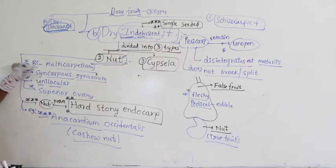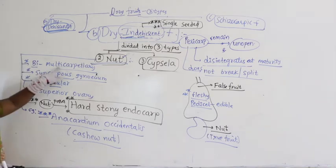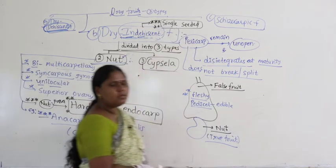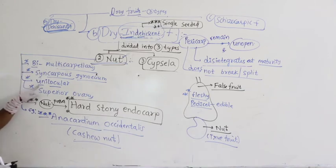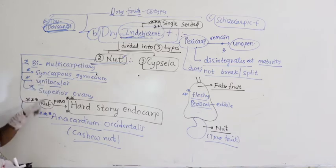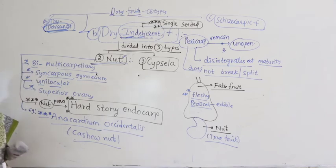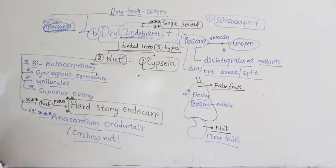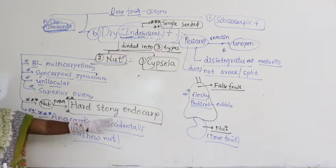So here, number of carpels may be two or many — multicarpellary. All are single-seeded here. So here unilocular, syncarpous gynoecium means carpels are fused, superior ovary. These are the characteristics. But the very, very important character is: nut possesses hard stony endocarp.